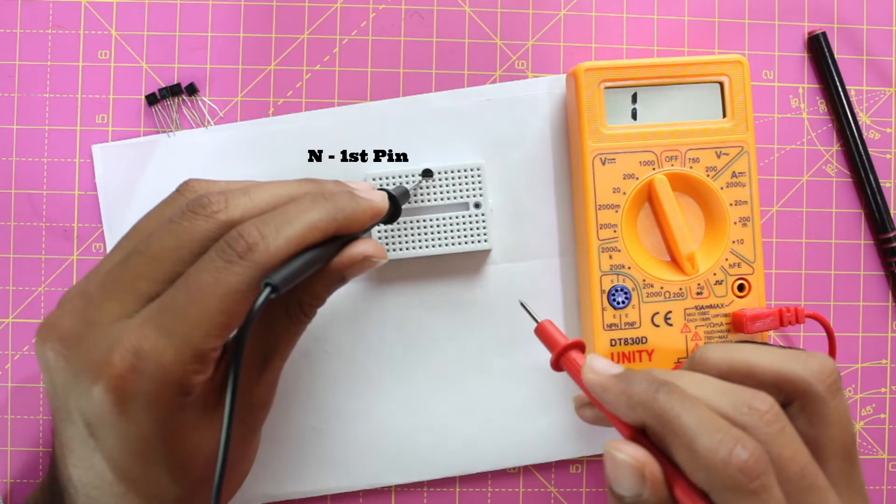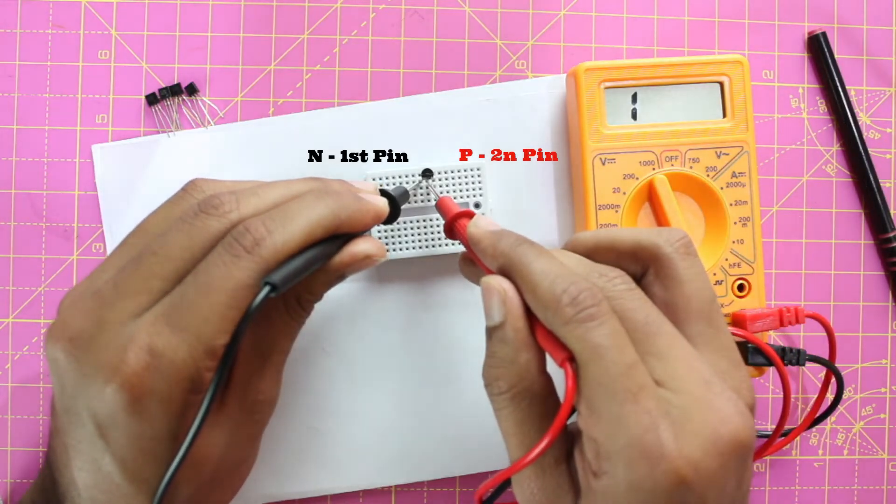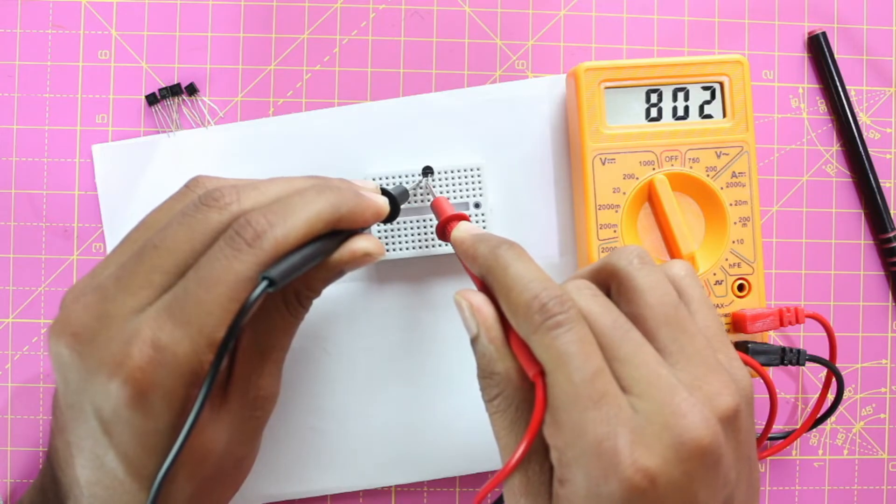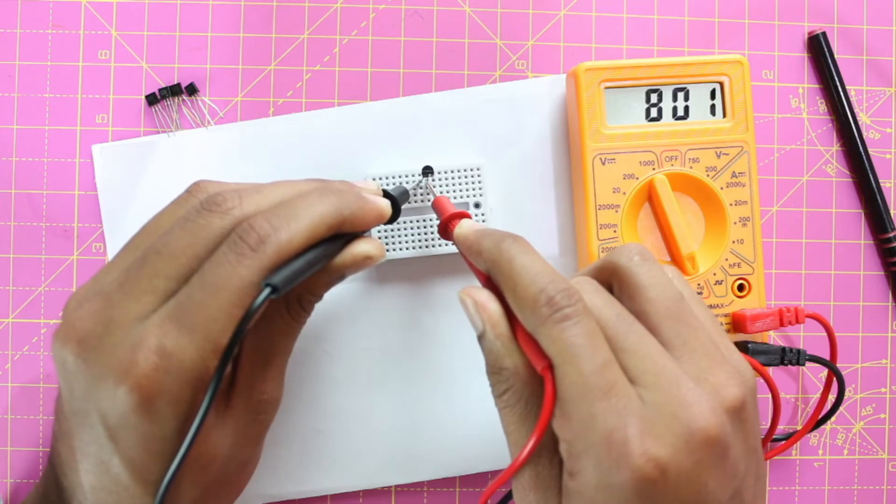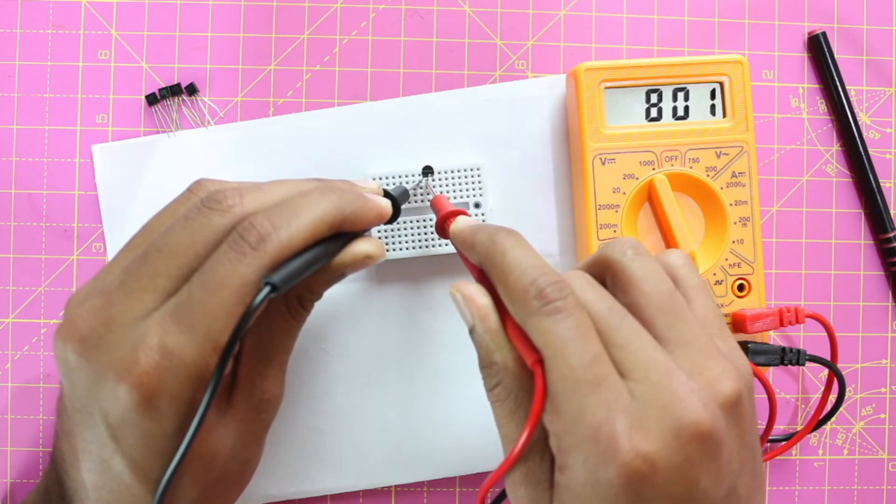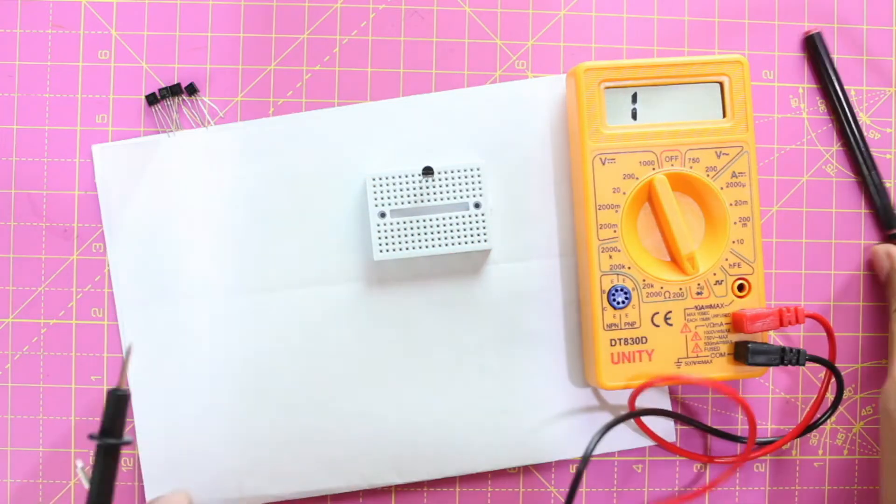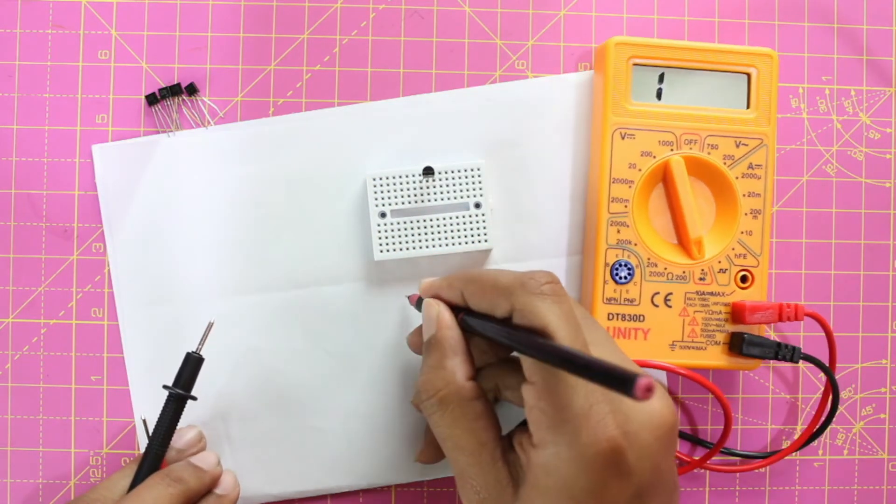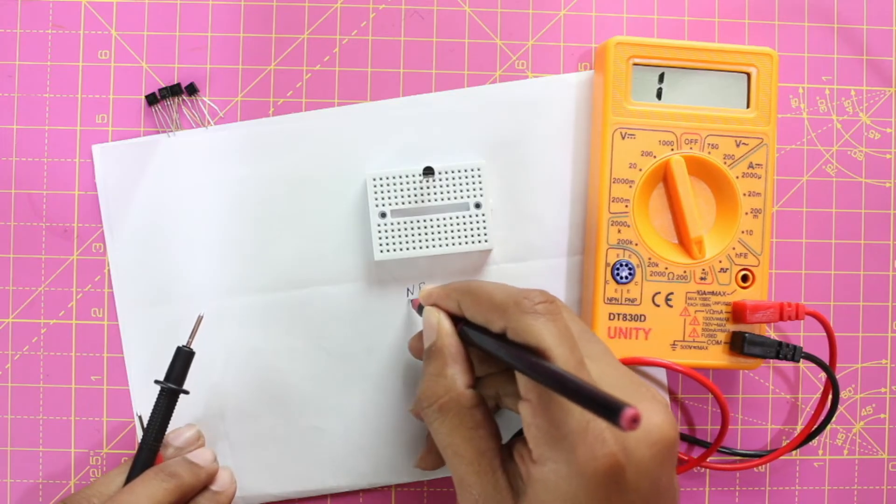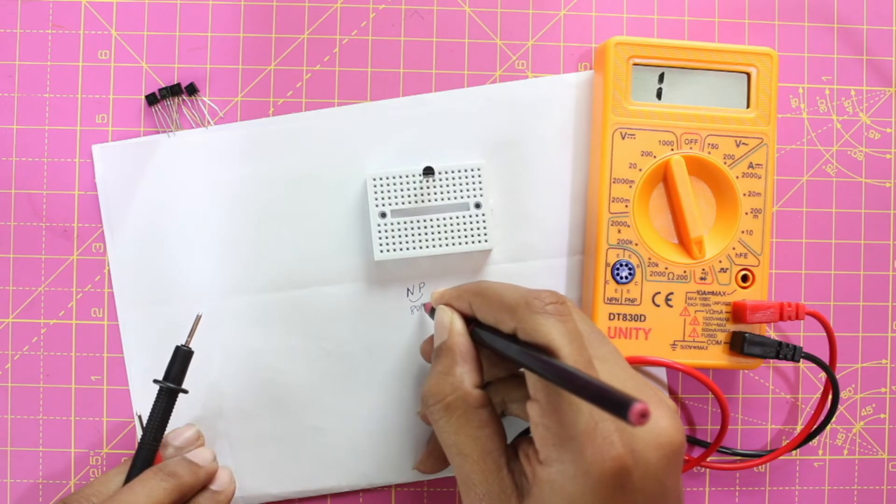Let's keep the N on first pin and P on second pin and check if you're getting any voltage drop. So we are getting a voltage drop here, and the voltage drop is 801 millivolts. So first pin is N, second pin is P, and the voltage drop is 801. Let's write it down: N P and the voltage drop was 801.